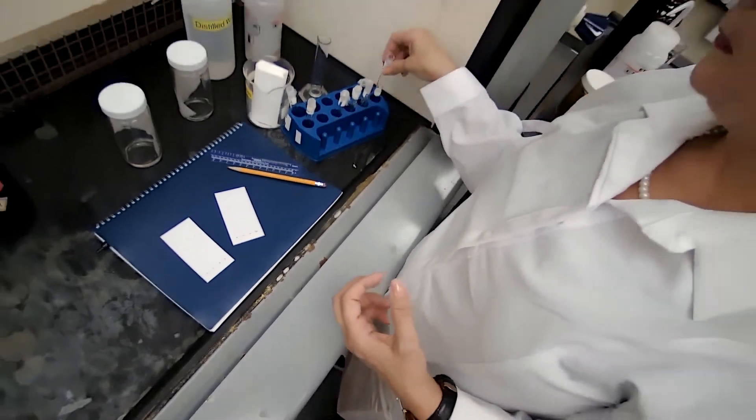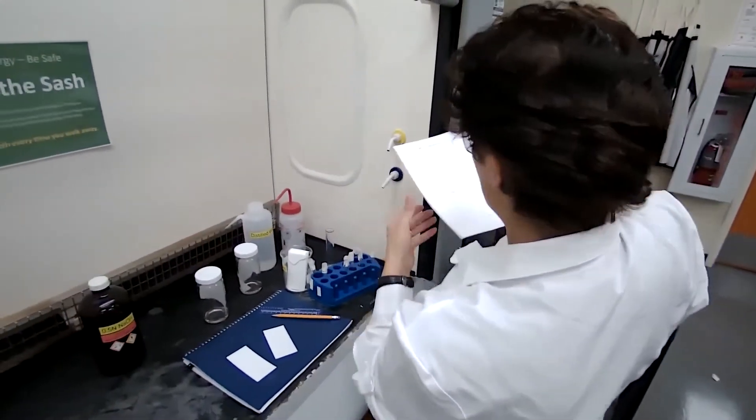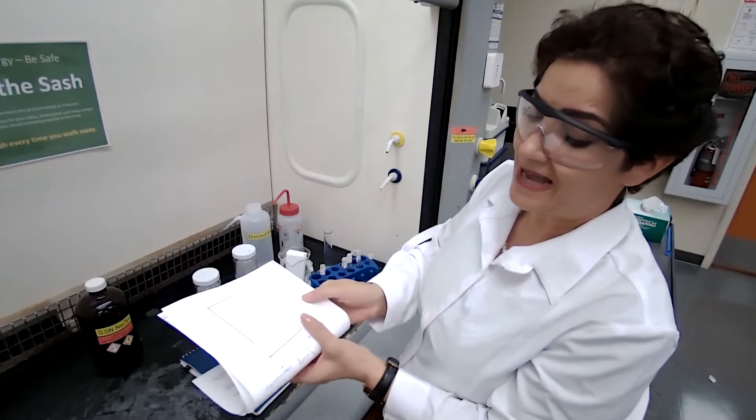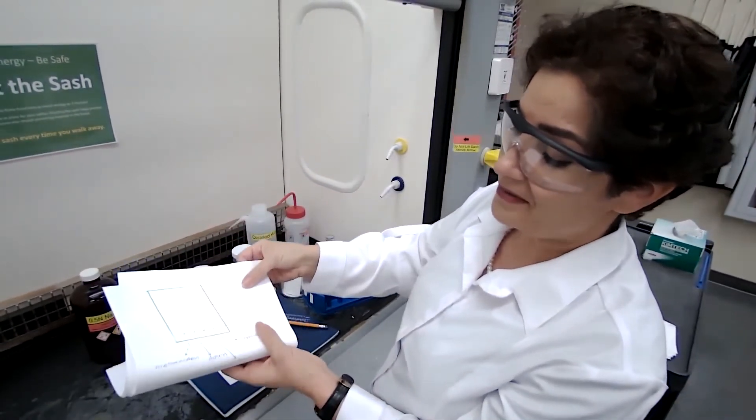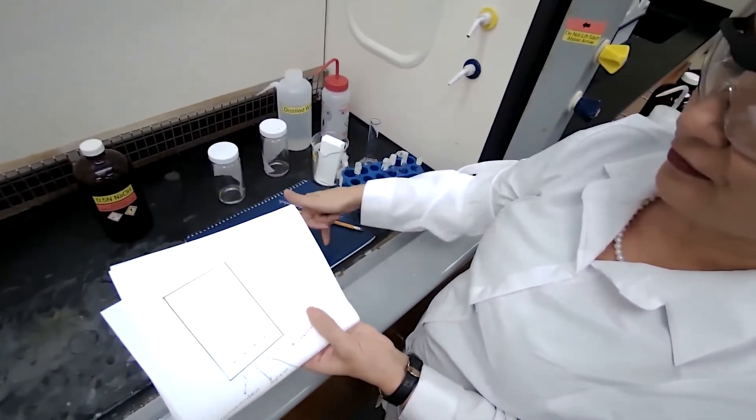When you are trying to spot the TLC plate, spotting the plate means you are putting the sample on a assigned area like I have in this diagram. I'm going from left to right.